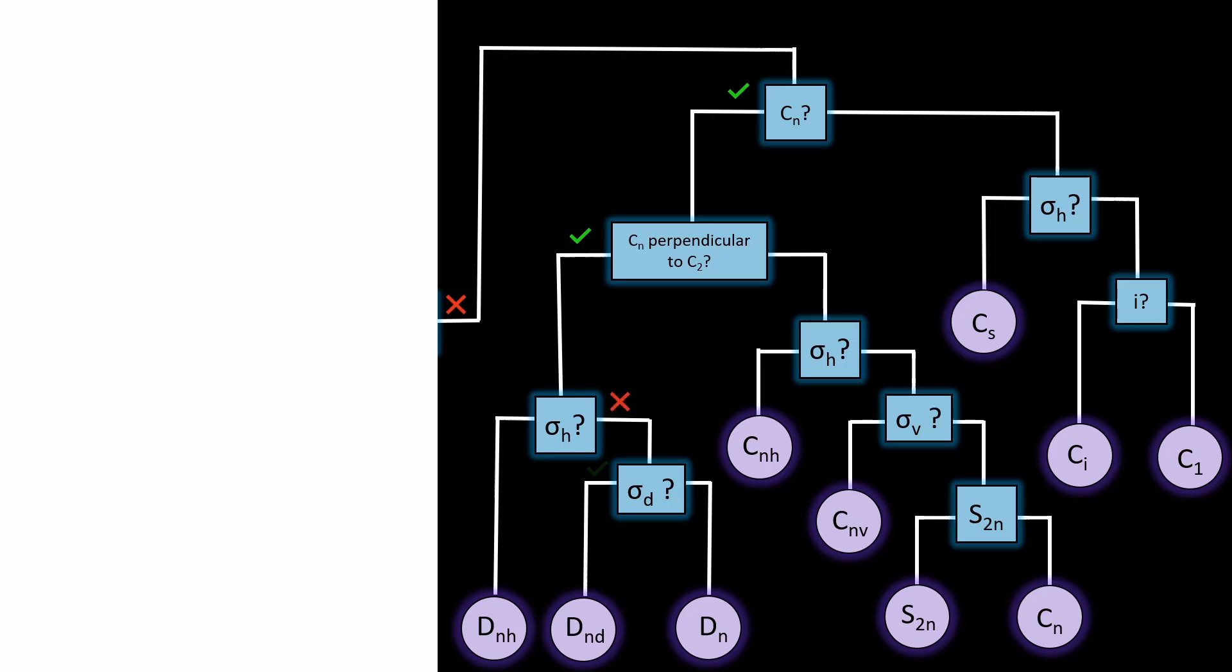If it has a diagonal mirror plane, it's Dnd, for example phosphorus pentafluoride. But if it has no mirror planes, it's just Dn, for example naphthalene.